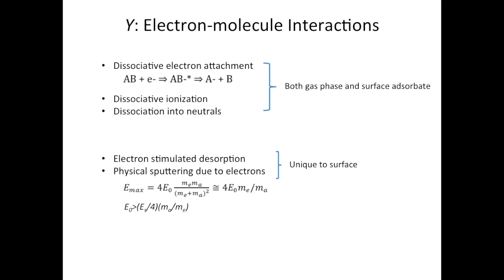The second surface-unique type is physical sputtering. The maximum energy transferred from an electron to the molecule is proportional to the initial electron beam energy E0. When the transferred energy exceeds the critical value — normally the binding energy of the surface atoms — then the surface atom can be sputtered off. This also shows the incident electron beam energy has a critical value if you want to sputter off the surface atoms.